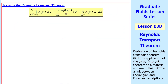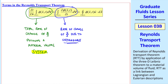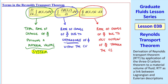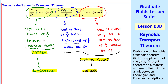Now let's label the terms in the Reynolds Transport Theorem. The term on the left is the total rate of change of capital Phi following a material volume — this part is the system. The second term is the rate of change of capital Phi due to unsteadiness of lowercase phi within the control volume. And the third term is the rate of change of capital Phi due to net outflow of phi through the control surface. Note that the second term is zero if the flow is steady, but even for a steady flow, the third term won't be zero in general. The left-hand side is the system in the Lagrangian framework, and the two terms on the right involve the control volume in the Eulerian framework.